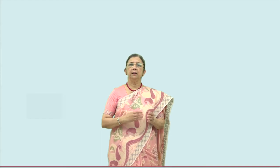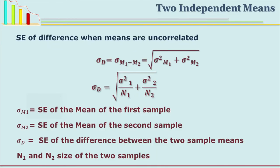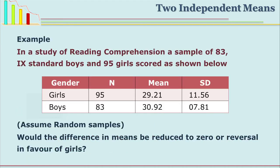Now let us see how to compute and find out whether the difference between two uncorrelated means is significant or not. Please see this formula. We have to find out the standard error of difference, written as SED or σD. The standard error of difference is a type of standard deviation — the standard deviation of population means. The SE of difference between two means, M1 minus M2, is the square root of (SE of mean1 squared plus SE of mean2 squared), which gives you the standard error of difference between two means.